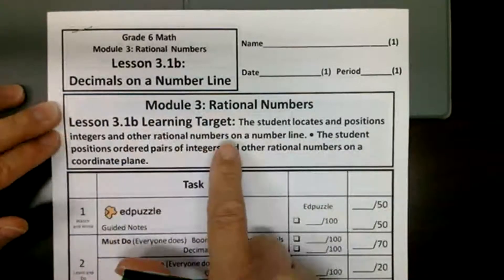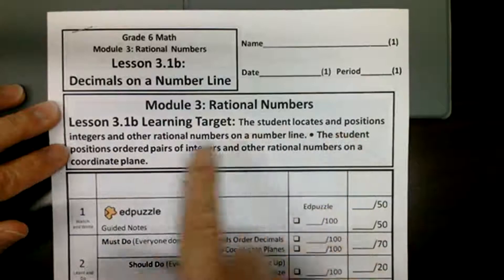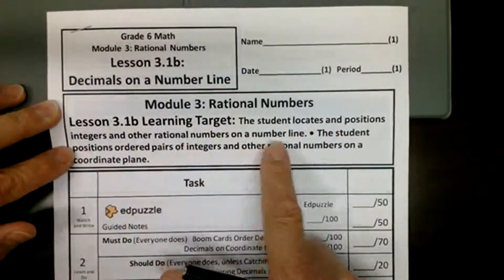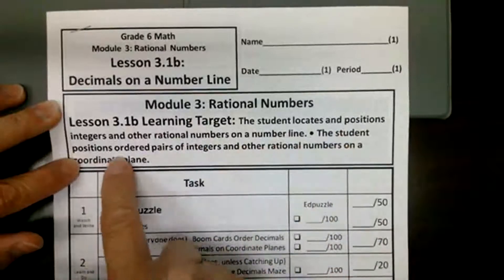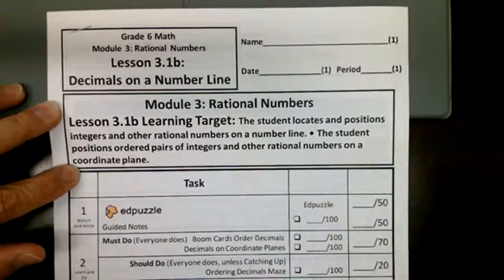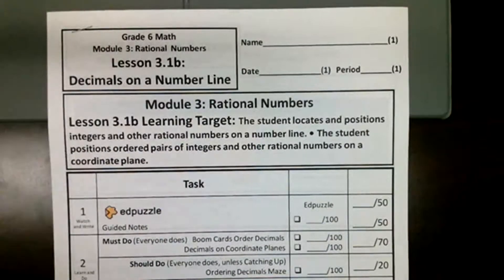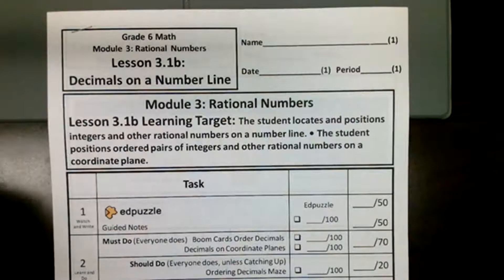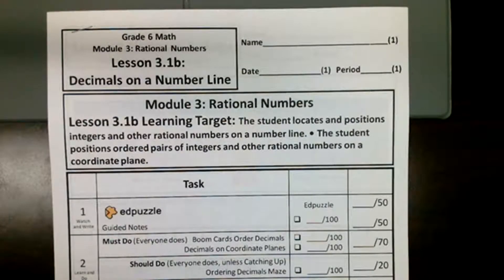We have the same learning target: the student locates and positions integers and other rational numbers on a number line, as well as the student positions ordered pairs of integers and other rational numbers on a coordinate plane. In 3.1A, we put fractions on a number line and on a coordinate plane. In 3.1B, we're going to do decimals. So A was fractions, B is decimals, but both are rational numbers.